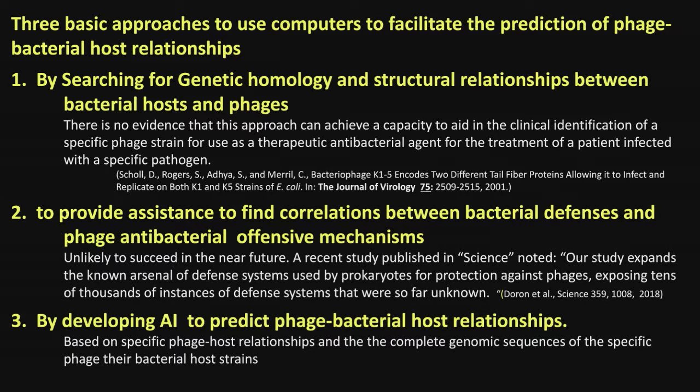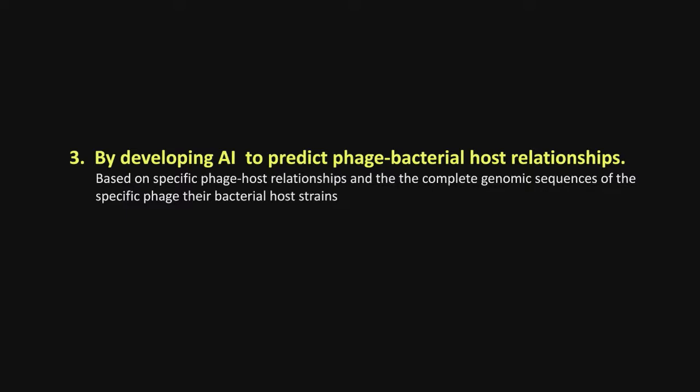Another approach is finding correlations between bacterial defenses and phage offensive mechanisms — but that will take a long time. A 2018 Science paper pointed out there are thousands of defense systems yet undiscovered, and a lot of what we call dark genes in the phage are for exactly that. Not only do they have to get into the bacteria, but they compete against each other too. So the question is: can we just use artificial intelligence with the genomic sequences of both viruses and bacteria? To me, that is really the only real hope we have, although it's going to be difficult.